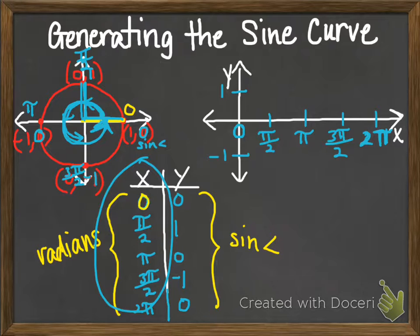When x is 0, y is 0. So when I graph (0,0), that point will be right there. When x is π over 2, my y-coordinate is 1. So I'm going to go up one unit, put a dot. When x is π, I'm down at -1.